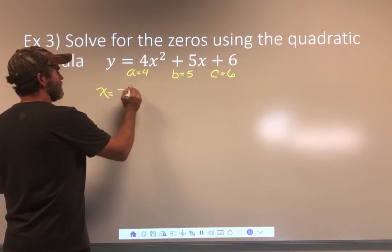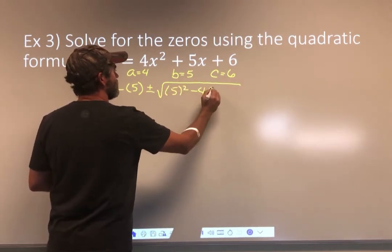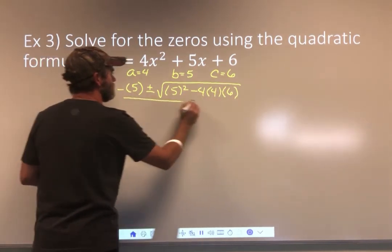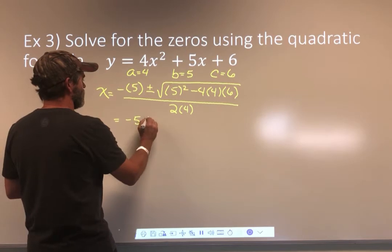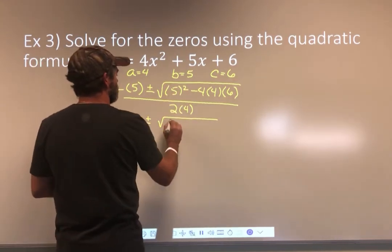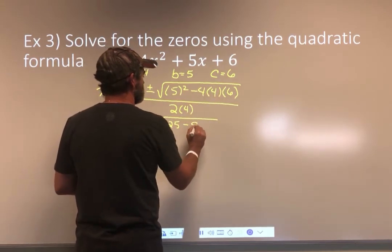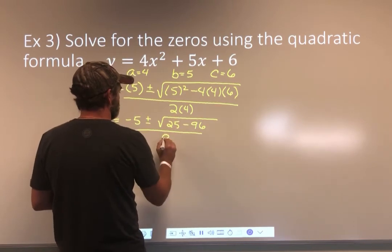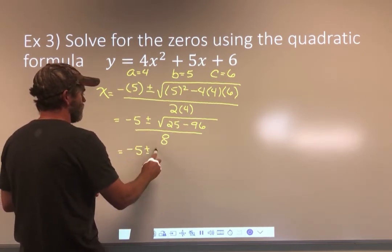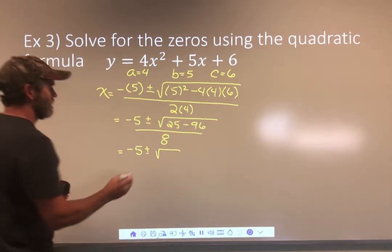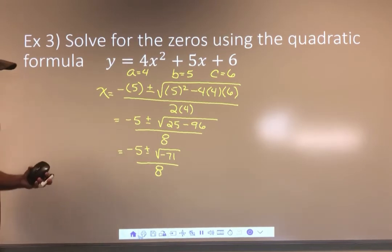So what do we got? X equals negative B plus or minus the square root of B squared minus 4AC over 2A. So there's negative 5 plus or minus, and let's clean this up a little bit. That's 25. This is negative 16 times 6. That's 96. And that's 8. One step left to get a better look at what we have. What is this? 25 minus 96 is negative 71. And that's over 8. So there's a couple things we've got to do here. Actually, there's only one thing we've got to do here. We've got to reduce this.